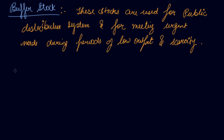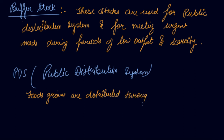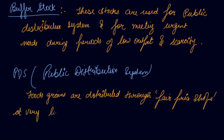The fourth concept is PDS — the Public Distribution System. Under this system, food grains are distributed through fair price shops at a very subsidized or low rate to the backward sections, below-poverty-line people, and the poorer sections of society, so that they can at least have access to these grains.